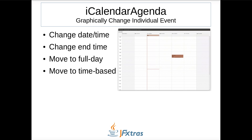Events can be changed graphically. There are four changes possible: the start and end date time can be changed by dragging to a new date time; the end time can be changed by grabbing and moving the line at the bottom of the recurrence; and a time-based recurrence can be made whole day or a whole day recurrence can be made time-based.